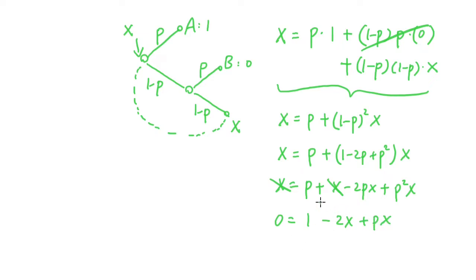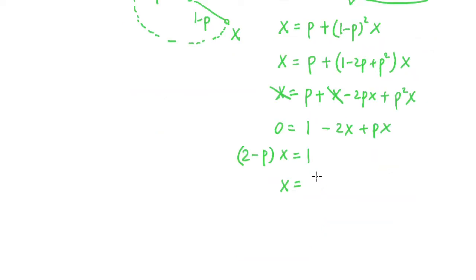Let's move the X over to the other side. So it will be 2 minus P times X is equal to 1. So X is equal to 1 over 2 minus P.